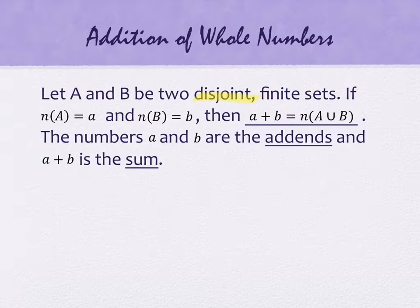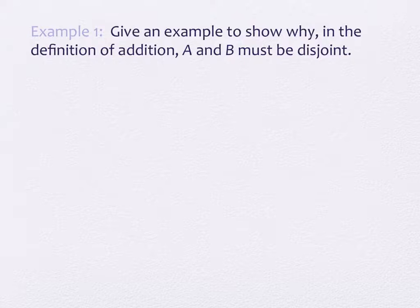Our first example is to actually take a look at why we need these to be disjoint for this to make any kind of sense at all. It wants us to give an example to show why A and B must be disjoint. So whenever something talks about showing why they must be disjoint, the whole idea is, let's connect them and see what fails to work. That's what we're going to do.